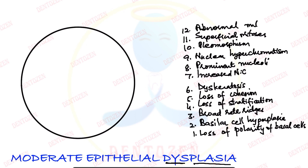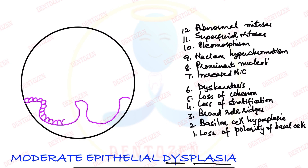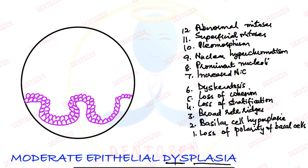Now let's quickly draw all these features in the diagram. First we have broad rete ridges. Within the broad rete ridges, we have to show basilar cell hyperplasia. Basal cells are cuboidal or low columnar shaped cells. Because it is basilar cell hyperplasia, we have to draw more layers. We have already shown the feature of broad rete ridges. Next we have to show loss of polarity of basal cells, so we'll show different orientations of nuclei within these basal cells.